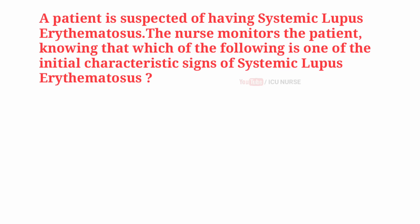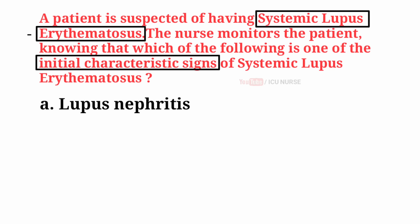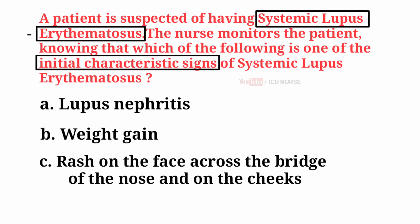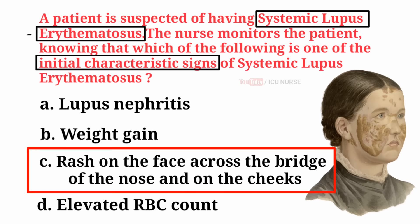A patient is suspected of having systemic lupus erythematosus. The nurse monitors the patient knowing that which of the following is one of the initial characteristic signs? A. Lupus nephritis. B. Weight gain. C. Rash on the face across the bridge of the nose and on the cheeks. D. Elevated RBC count. And the correct answer is C — rash on the face across the bridge of the nose and on the cheeks.